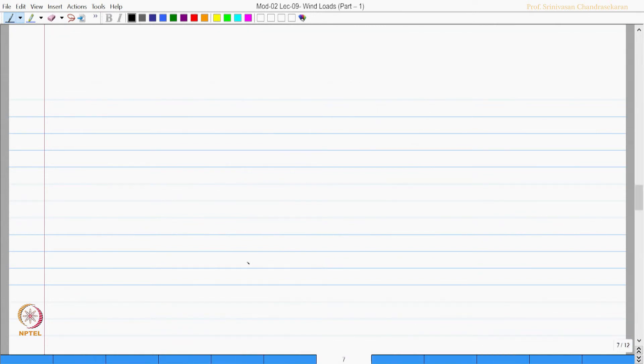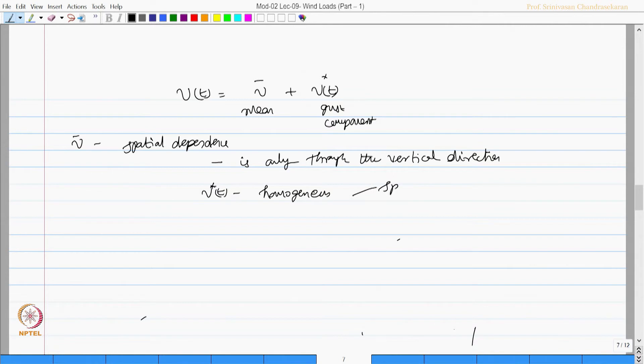We can say v(t) equals v_bar plus v'(t). This is my mean component, this is my gust component. Mean component has spatial dependence, but it is assumed the spatial dependence is only through the vertical coordinate. v'(t) is considered homogeneous both in space and time.